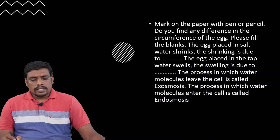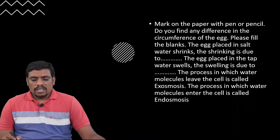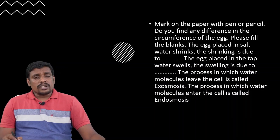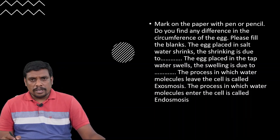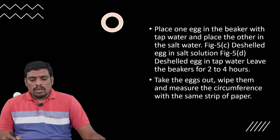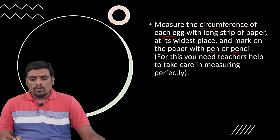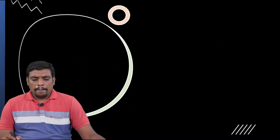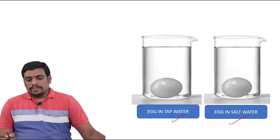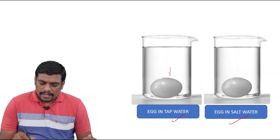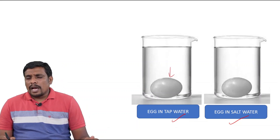After that, the egg placed in salt water shrinks. What is the reason for shrinking? Let us go to the first diagram once again. Here, the egg which is placed in tap water — what happened? And the egg which is kept in salt water — what happened?